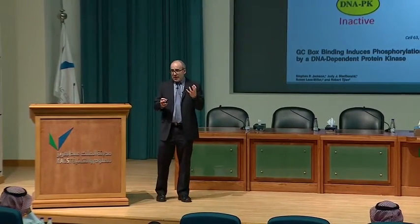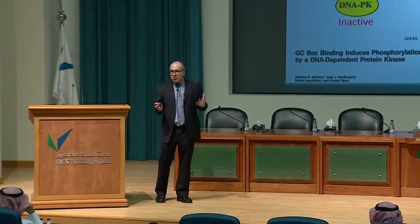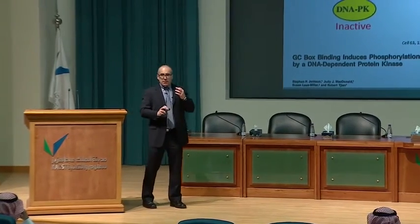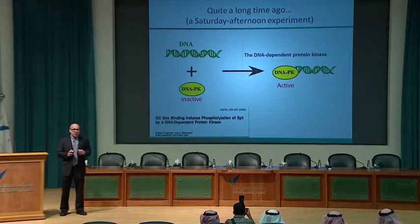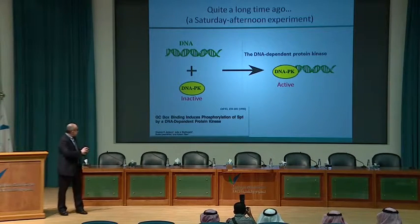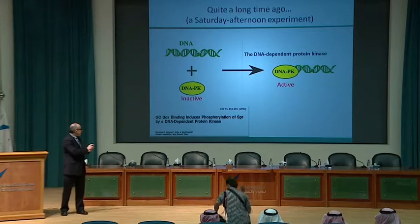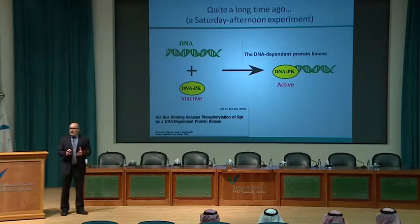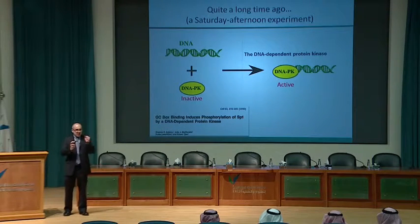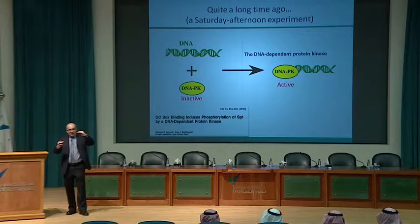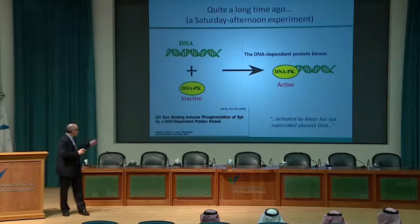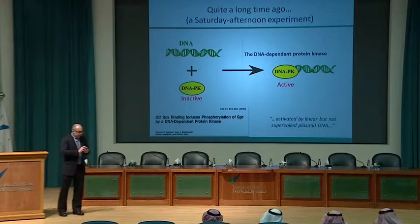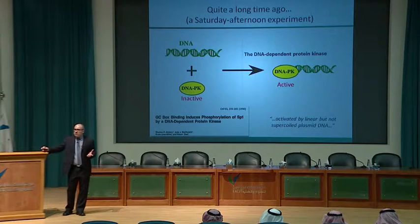Using biochemical extracts from human HeLa cells, I observed an activity called DNA-PK — DNA-dependent protein kinase — which phosphorylates target proteins but only when DNA is present in the test tube. In that Saturday experiment, with or without DNA, I observed my favorite protein SP1 running higher on an SDS polyacrylamide gel when DNA was present, indicating phosphorylation. This observation led to a paper in Cell, which helped my career.